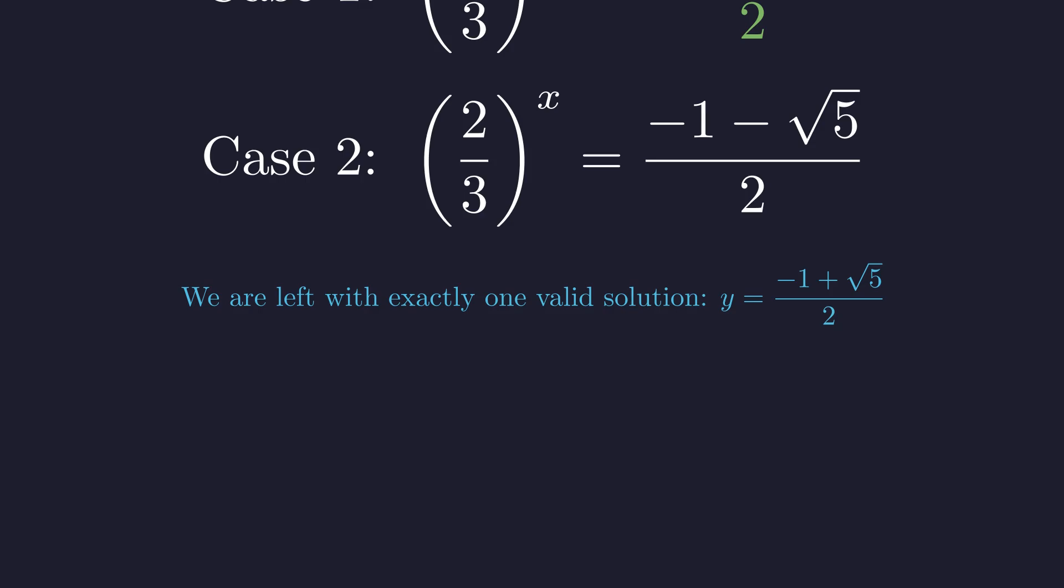This leaves us with exactly one valid solution: y equals negative 1 plus the square root of 5, all divided by 2, which is approximately 0.618. Now we can proceed to find the exact value of x. Now that we've determined the valid value for y, we can solve for x by using our substitution equation. This is the final step of our journey.